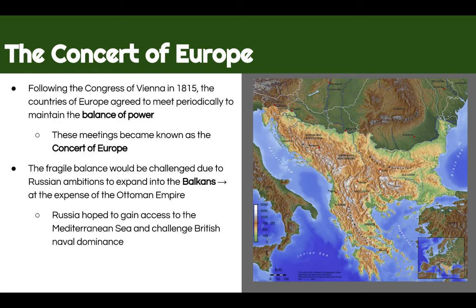This is successful for a while, but that fragile balance of power in Europe would eventually be challenged. Russia is mainly at fault for this because they have ambitions to expand into the Balkan Peninsula — the peninsula where we find Greece, Serbia, and Bulgaria. Russia really wanted to come into this area to challenge the Ottoman Empire, but also to gain access to the Mediterranean Sea, and thus challenge the British for naval dominance.